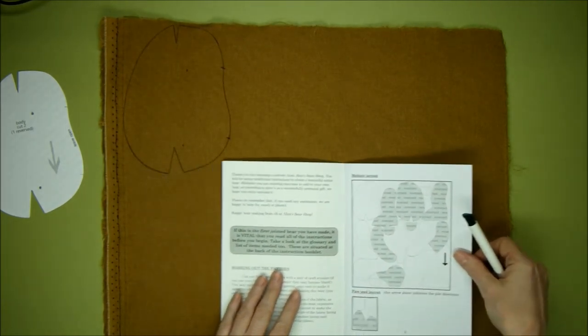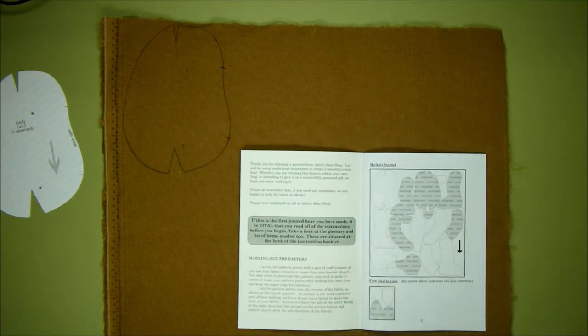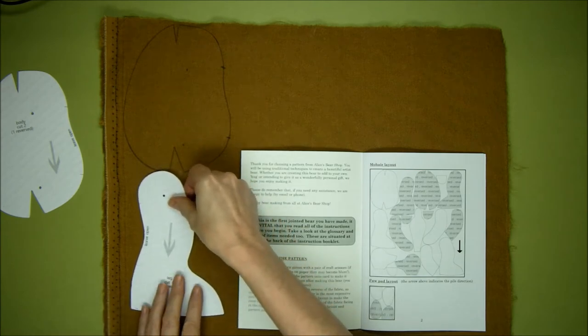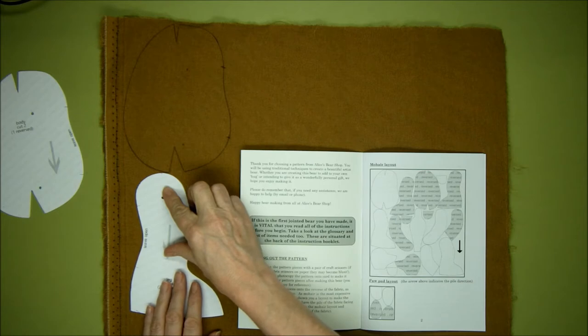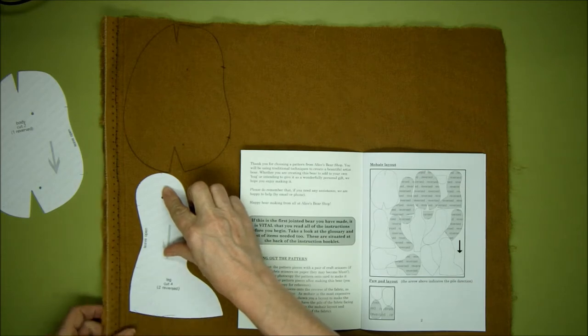Let's have a look at what's next. We're going to go for a leg. Again, it's white on our layout, so that means it's the right side.